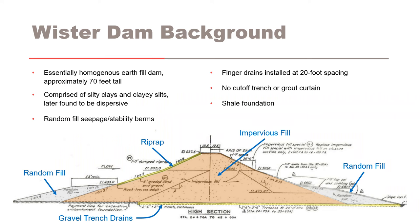Worcester Dam is owned and operated by the U.S. Army Corps of Engineers and is located near Worcester, Oklahoma. It's essentially a homogenous embankment comprised of silty clays and clay silts with an average PI of 9, which were found to be dispersive after construction.